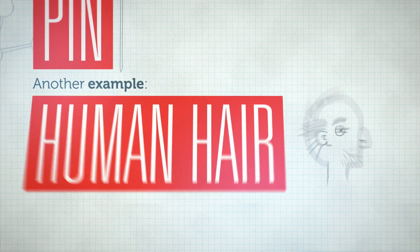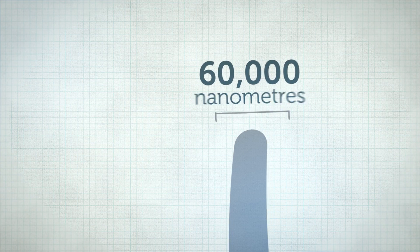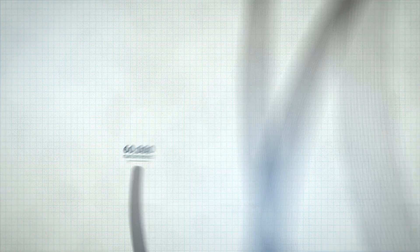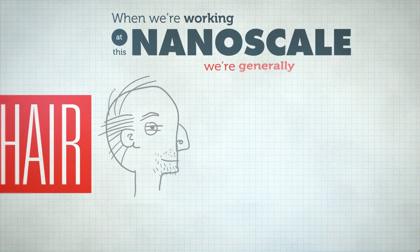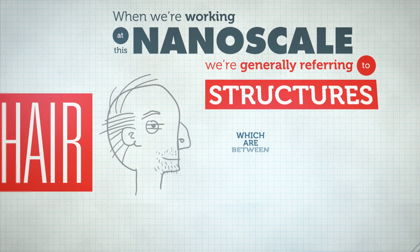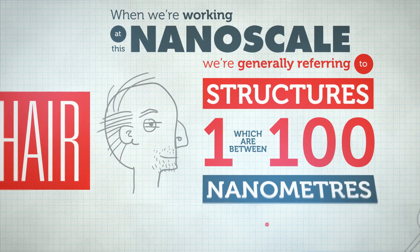Another example: a human hair is 60,000 nanometers across. When we're working at this nanoscale, we're generally referring to structures which are between 1 to 100 nanometers in scale.